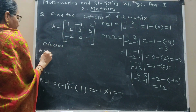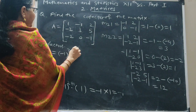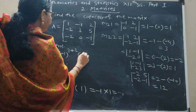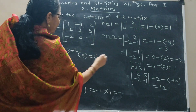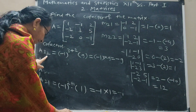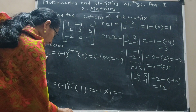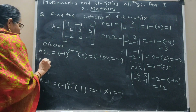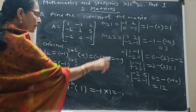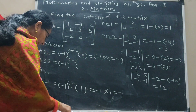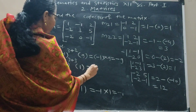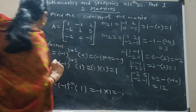A32 = (minus 1)^(3+2) × M32; M32 = 9; power is odd so value is minus 1; product is minus 9. So A32 = minus 9. A33 = (minus 1)^(3+3) × M33; M33 = 1; power is even so value is 1; result is 1. So A33 = 1.